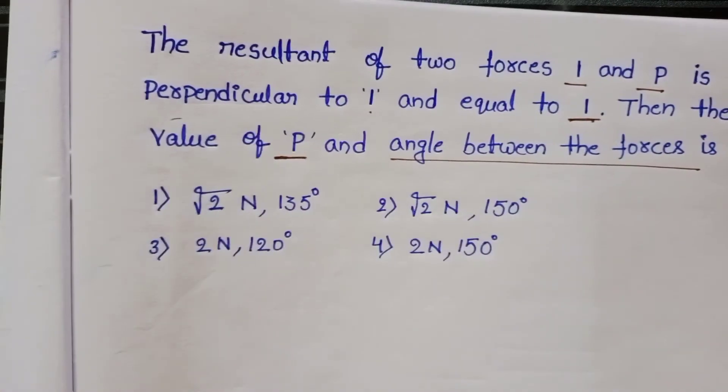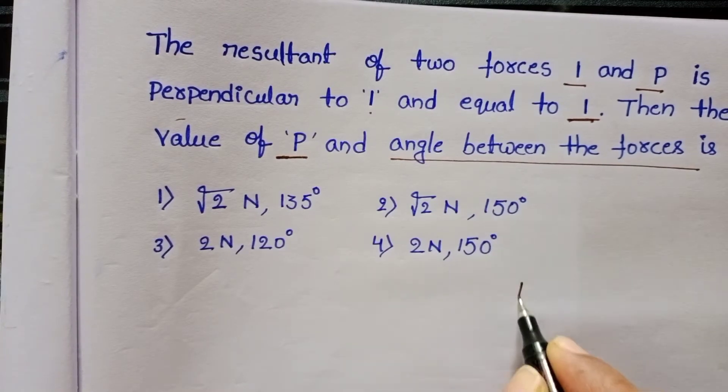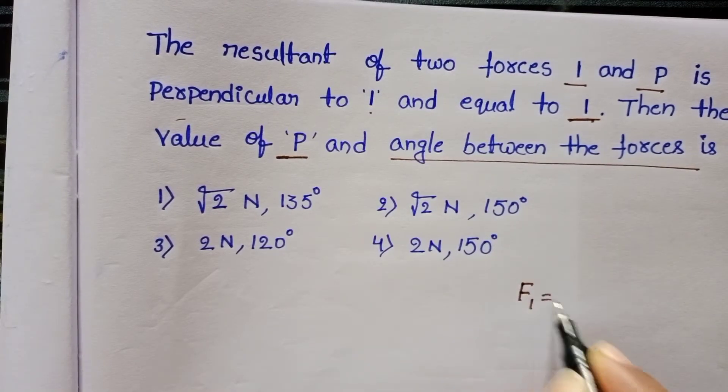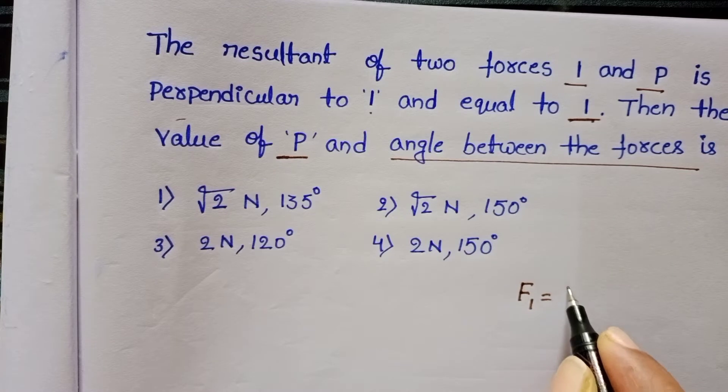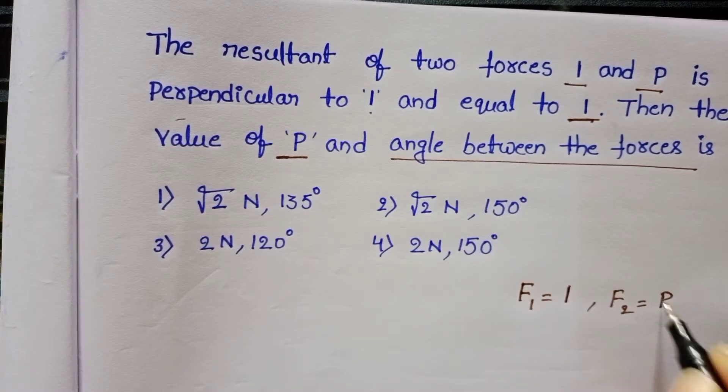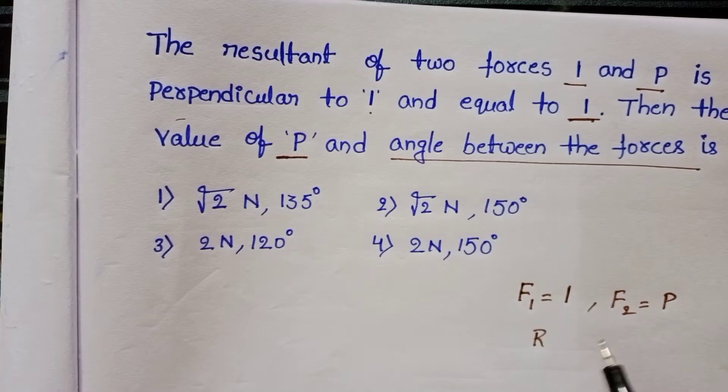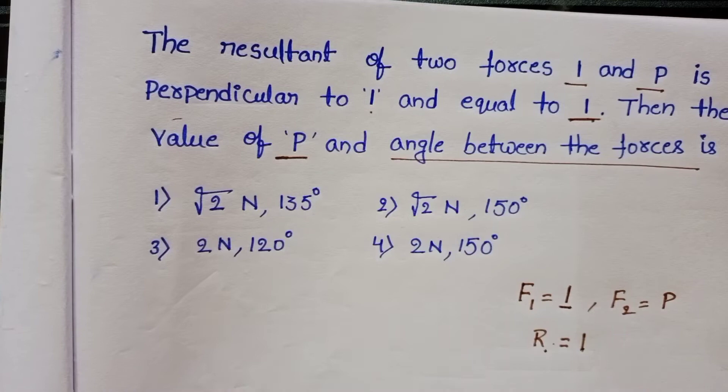To solve this question, diagram is very very important. Given forces F1 equals 1 and the second force P, resultant of these two forces is equals to 1. The main condition in this question: resultant and one of the forces, that is 1, these two are perpendicular to each other.